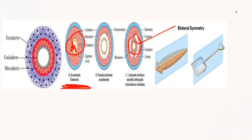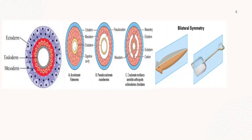The third distinguishing feature of Platyhelminthes is that they have bilateral symmetry. Bilateral symmetry is a type of symmetry in which one plane passing through the organism divides the animal into two equal halves or two mirror images, as you can see in this diagram.